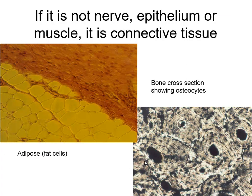Any tissue that's not nerve, not epithelium, and not muscle belongs to the connective tissue group. This is going to include blood, bones, and fat. We've talked about fat cells — they look empty; the yellow ones on the left side of your screen are adipose or fat cells. We haven't gotten to bone yet, but bone also belongs to connective tissue, and it looks like tree rings made out of calcium and phosphate.